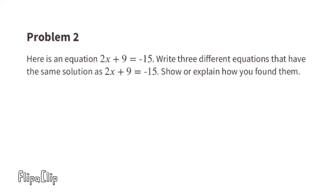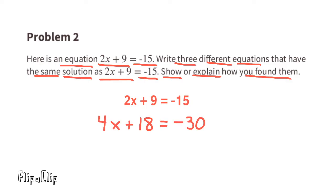Problem number two: here's an equation — 2x plus 9 equals negative 15. Write three different equations that have the same solution as 2x plus 9 equals negative 15, and show or explain how you found them. I can double all three terms and the x will have the same value. For example, I doubled 2x to get 4x, doubled plus 9 to get plus 18, and doubled negative 15 to get negative 30.